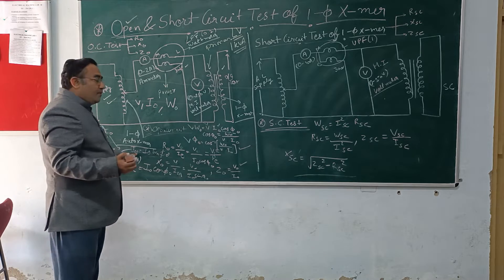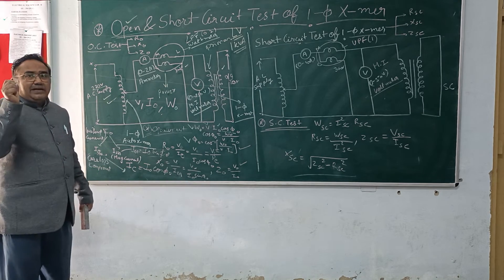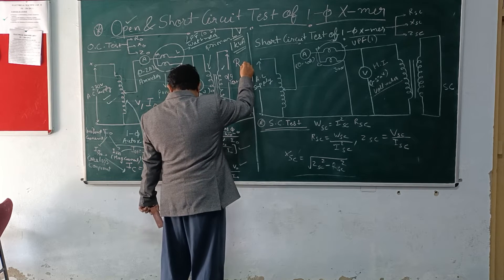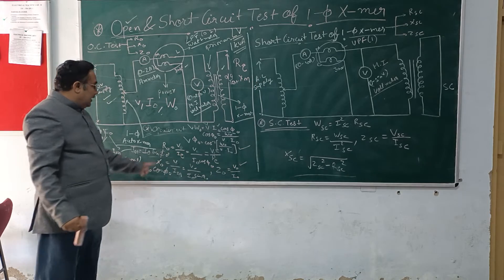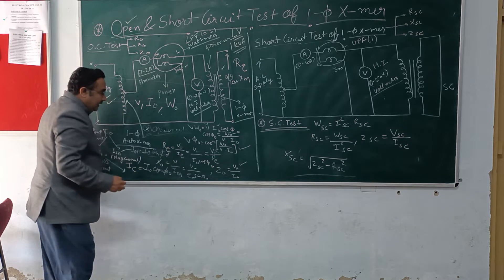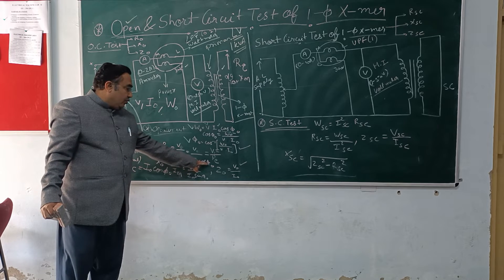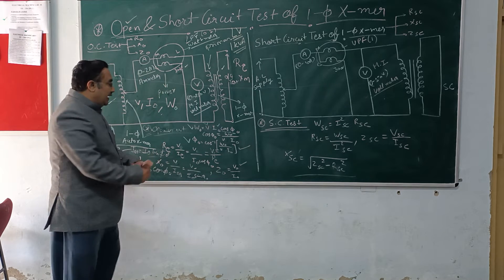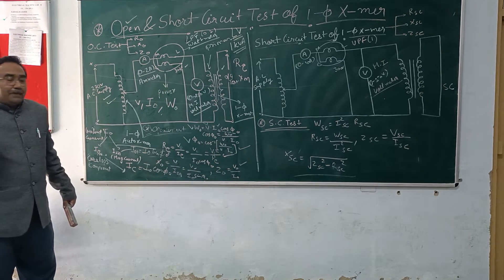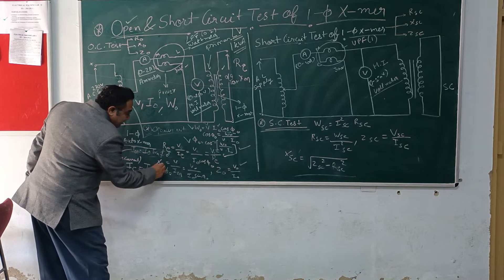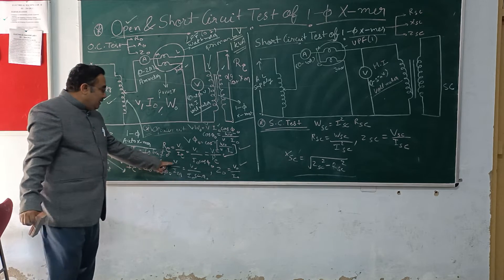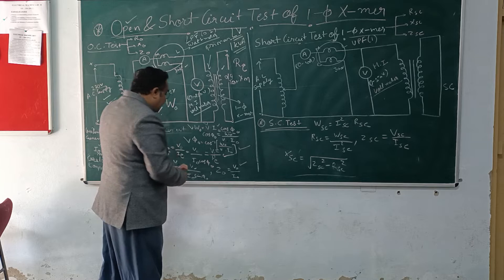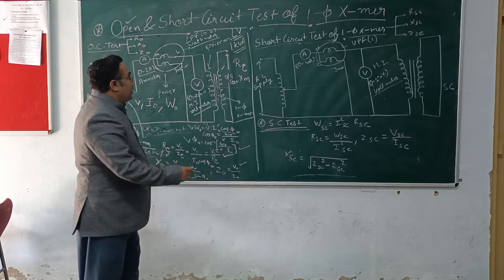IE is known as the core loss current component. We have now found out some equivalent circuit parameters of a transformer at no-load. There are two parameters: RE and XM. RE is nothing but V divided by IE, which is V divided by I0 cos φ0, or equivalently V² upon P. XM is the magnetizing reactance, equal to V divided by IM, where IM is I0 sin φ0. We have now calculated RE and XM, and from these you can draw the no-load equivalent circuit.